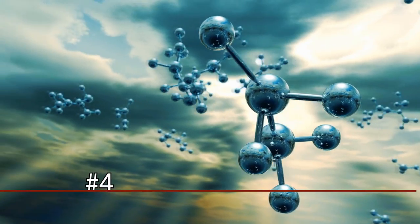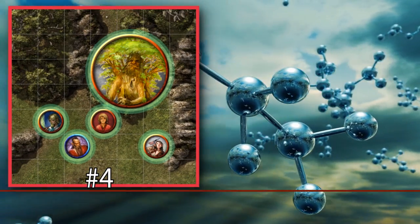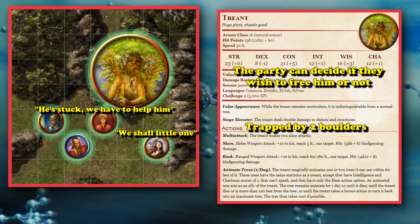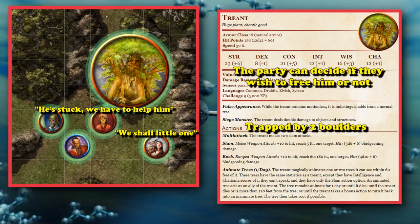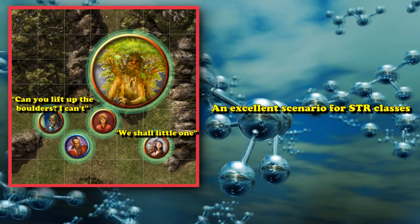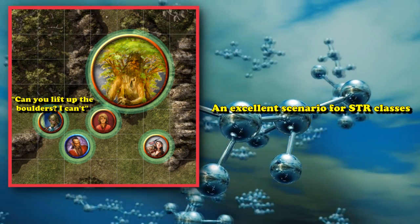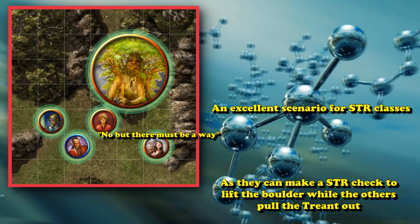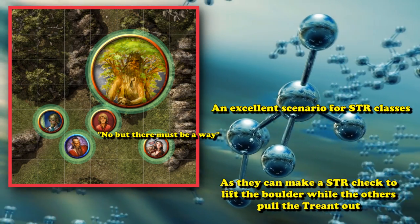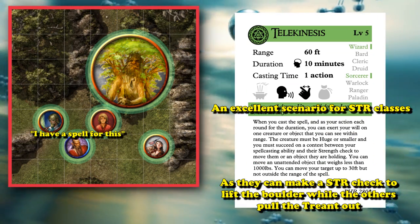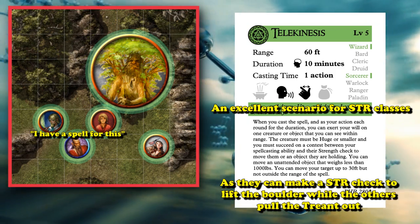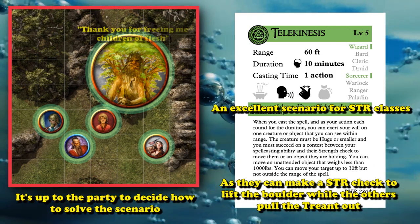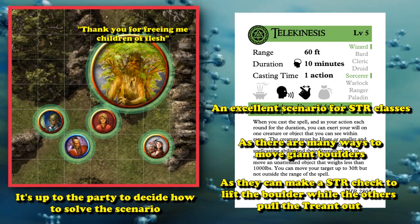And at number 4, we have the Trapped Ent. The setup is you come to a tree ent that has been trapped by two boulders, and it's up to your party to decide if they wish to free him, if they even can. This is an excellent scenario for characters with high Strength scores, as they can perform a Strength check to lift the boulder a little while everybody else helps pull the ent out. Magic could also be used to help, and as with most of these encounters, it's up to the party to be creative — there are many ways to get rid of the giant boulders.